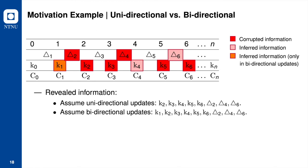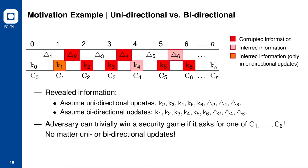Let's look at some motivating examples to help understand this relationship and present the proof idea. Consider a confidentiality game where we have an adversary against some variant of the confidentiality game for a UE scheme, using the corruption example presented before. Information in the red and pink boxes is revealed to the adversary regardless of uni or bidirectional updates. Information in the orange boxes is revealed to the adversary only in bidirectional updates.